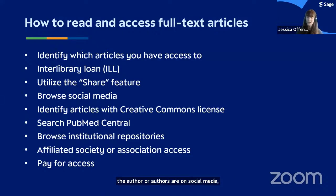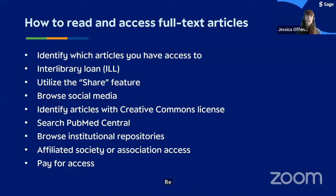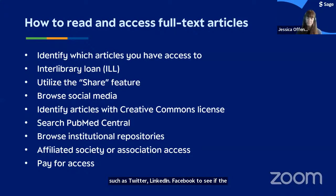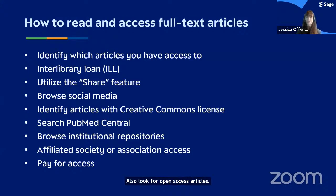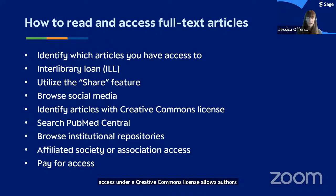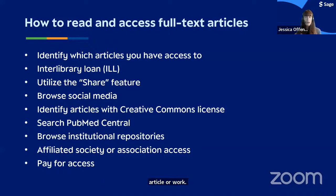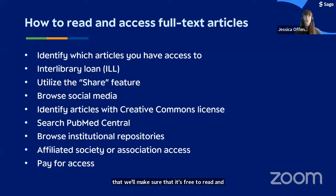You can contact the corresponding author to have them share access to the article, or see if the authors are on social media. Authors will often publicize their work and share free-to-access copies because, just like you, they want their research to be accessed, read, and cited. You can search social media platforms such as Twitter, LinkedIn, and Facebook to see if the author has a public profile to get in touch. Also look for open access articles — publishing open access under a Creative Commons license allows authors to retain copyright while allowing others to distribute, copy, and make use of the work.